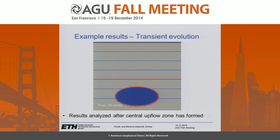I'd like to show some example results to demonstrate the transient nature of our simulations. This movie shows the evolution of a simulated geothermal system. The solid colors show the fluid phase state: gray is a single-phase fluid of liquid-like density, blue is a single-phase fluid of vapor-like density, and solid red represents boiling two-phase liquid and vapor. The solid blue lines represent pressure isobars with a 50-bar contour interval, and the red lines represent isotherms.